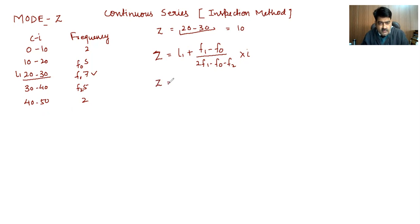Now I will put all the values in the formula. L1 is 20, F1 is 7 minus F0 is 5, upon 2 into F1 that is 7, minus F0 again 5, and F2 is also 5, and there is an interval of 10.